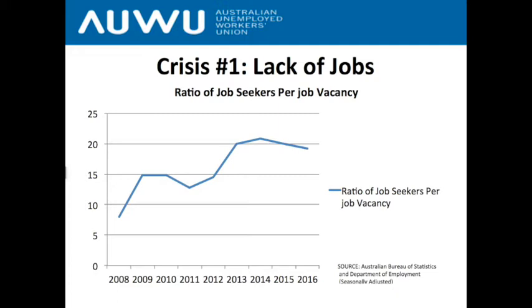This graph shows there are about 18 to 19 job seekers competing amongst themselves for every listed job vacancy. The data is taken from the Australian Bureau of Statistics. To reach this figure, the Unemployed Workers Union research team took the number of underemployed, unemployed, and hidden unemployed people counted by the ABS and compared that to the number of job vacancies from the Department of Employment.